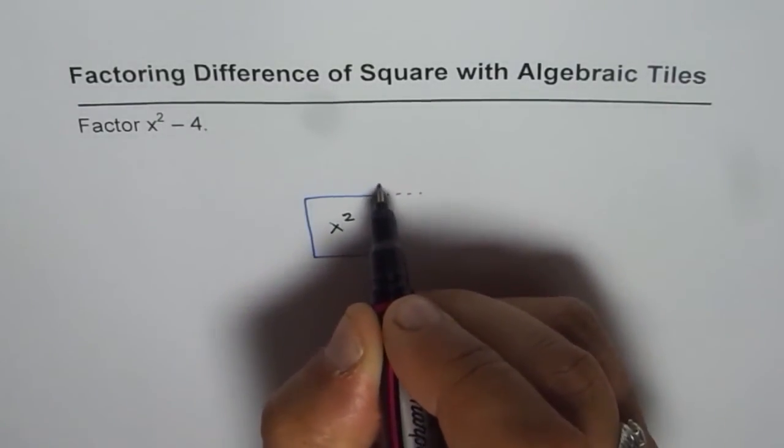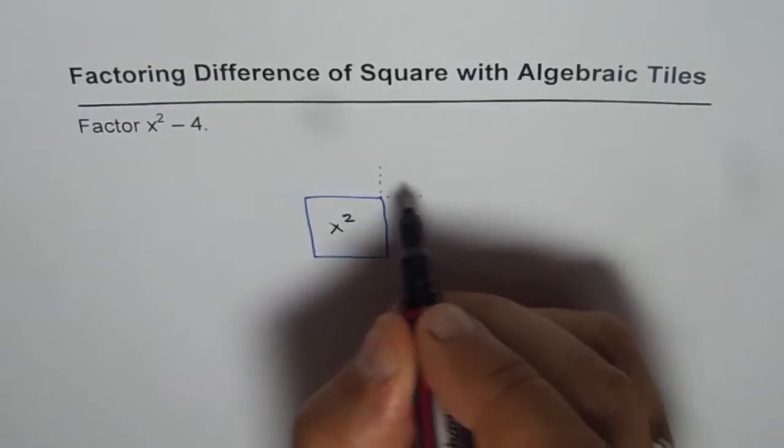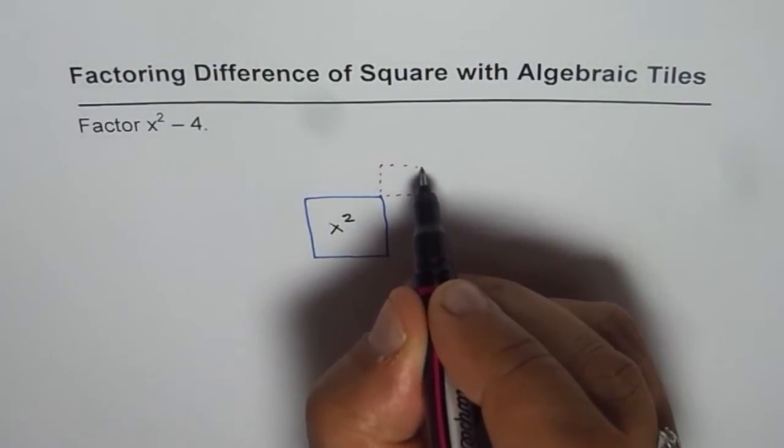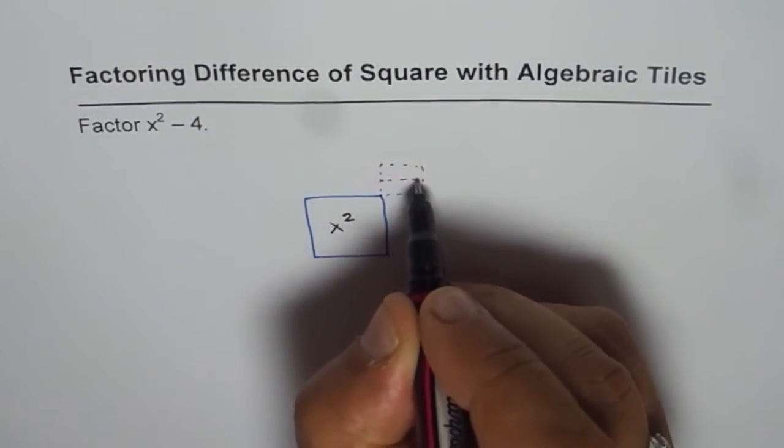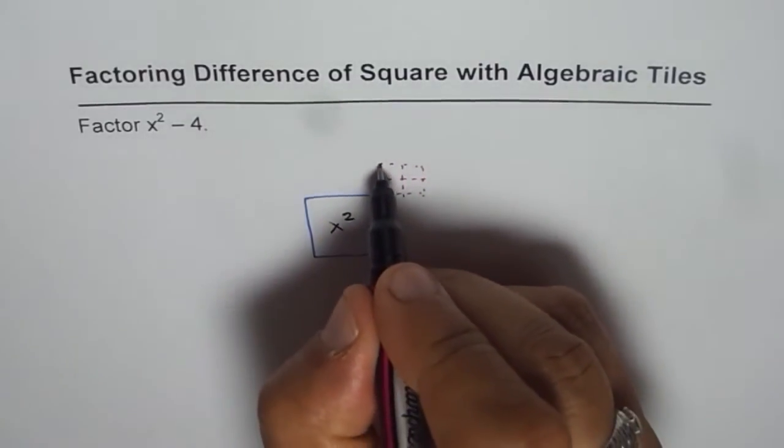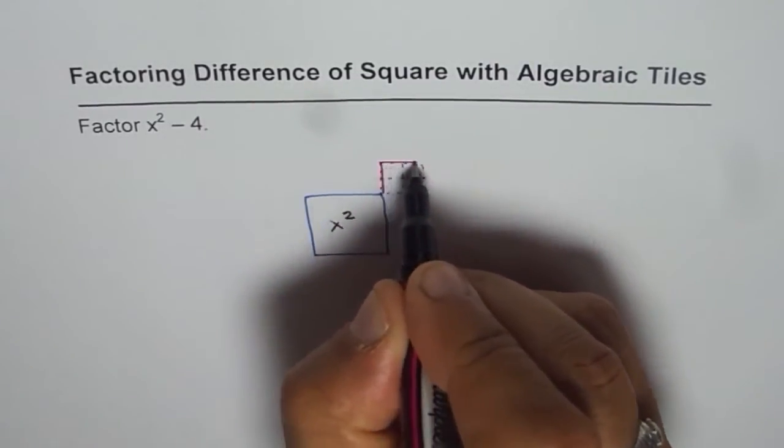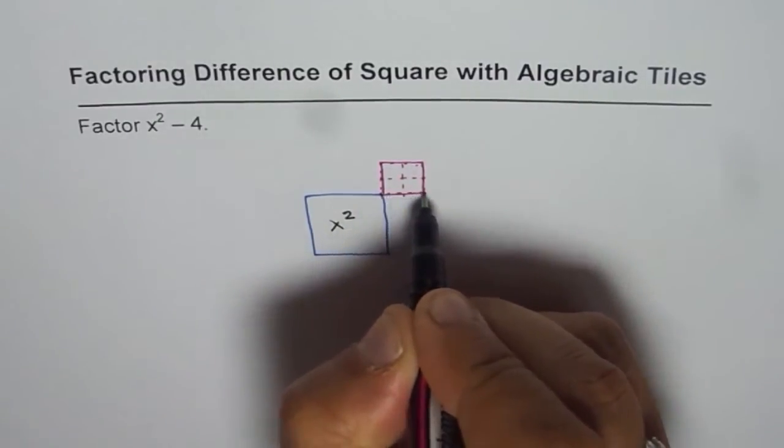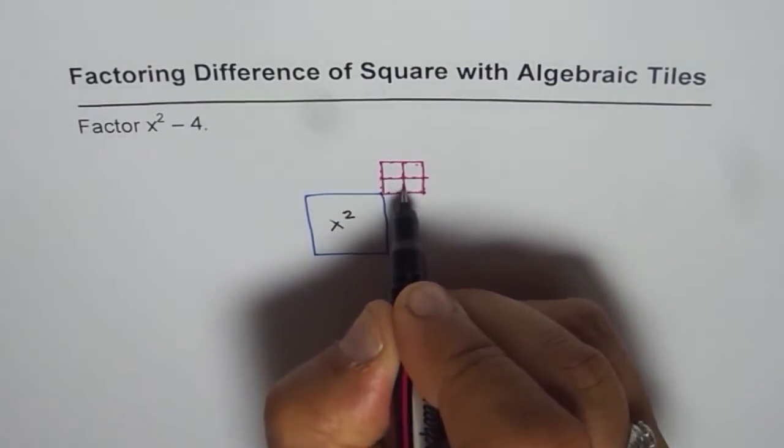So that is the position for placing 4 unit tiles. Let's place them in the form of a square itself. So that is the square for 4 unit tiles, negative 4. So we have these 4 tiles here, which represents negative 4 for us.